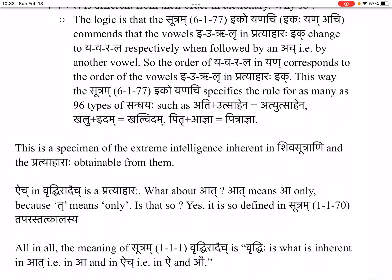'Aich' in Vruddhi-rād-aich is a pratyahāra. What about 'āt'? 'Āt' means 'ā' only, because the particle 'ta' means 'only'. Yes — it is so defined in sutra 1.1.70: ta-parastat-kālasya. All in all, the meaning of sutra 1.1.1 — Vruddhi-rād-aich — is: vṛddhiḥ is what is inherent in 'āt', that is in 'ā'; and in 'aich', that is in 'ai' and 'au'.